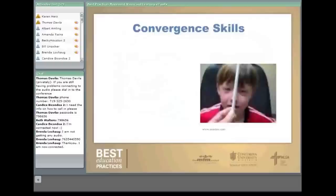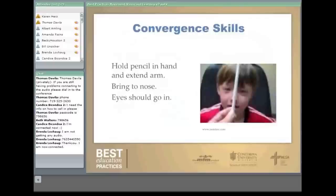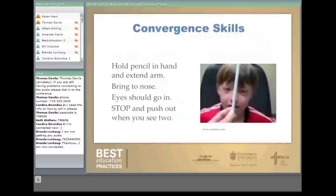For convergence skills, before reading class or during transition time, have students take a pencil, extend their arms, and bring it to their nose so their eyes converge on it. Sometimes kids will see double when the pencil gets close. They should stop at that point, try to keep the pencil a single image, then move the pencil back out and continue back and forth — kind of like a trombone — practicing to keep that a single image when it becomes double. About 10 repetitions is a good amount.